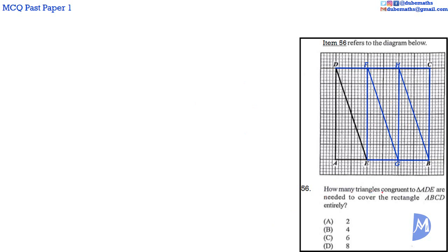Question 56. Triangle DEF is congruent to triangle ADE, as is triangle EFG, triangle FGH, and triangle BGH. Counting all congruent triangles — 1, 2, 3, 4, 5, 6 — six triangles congruent to triangle ADE are needed to cover the rectangle ABCD. The answer is C.